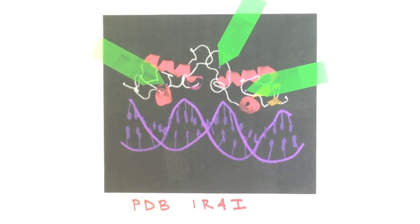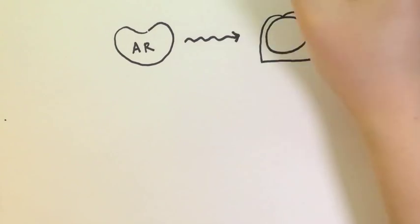This binding domain is also allosterically regulated by the binding of ligands in the ligand binding domain, in which the activation of the androgen receptor at the ligand binding domain increases the affinity of the DNA binding domain to create more stable complexes with DNA.